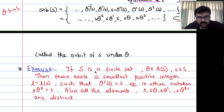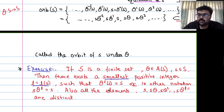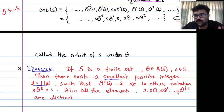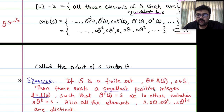The orbit of 2 is also going to be the same {1, 2, 4} because they are in the same equivalence class. As a result, the cycles are also disjoint — cycle of 1 and cycle of 3 are disjoint since they come from different equivalence classes.